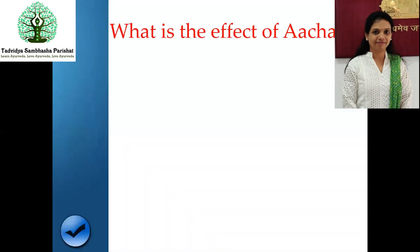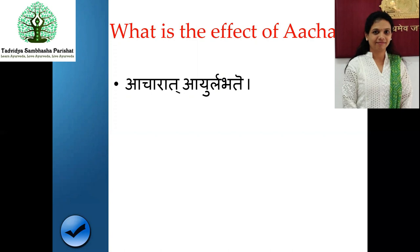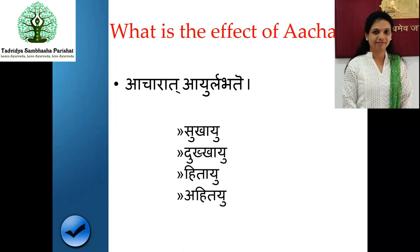Coming back to Vrita - Vrita means Achara. There is a famous saying: Achara ayuhu labate - the kind of life you get depends on your Achara. There are different types of Ayu: Sukhayu, Dukhayu, Hitayu, and Ahitayu. Whatever type of Achara you are doing will directly affect your life. If you are directing your activities toward Sukhayu, you will get Sukhayu; if toward Dukhayu, you will get Dukhayu. Whatever activities you do are directly proportionate to what kind of Ayu you get.